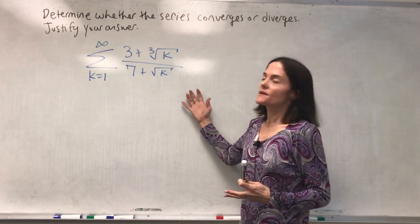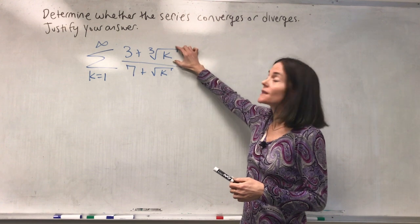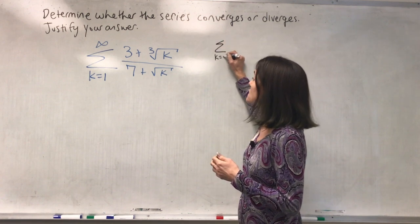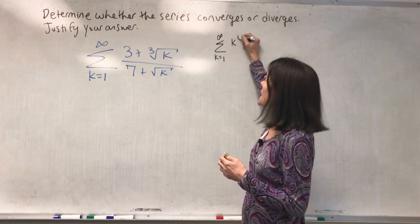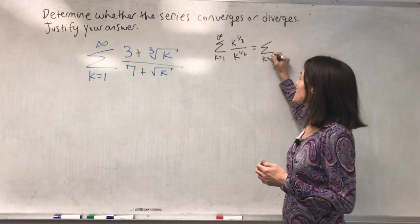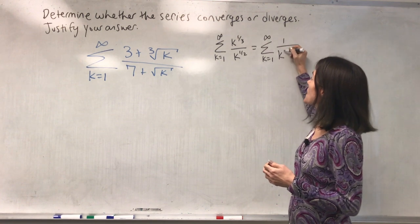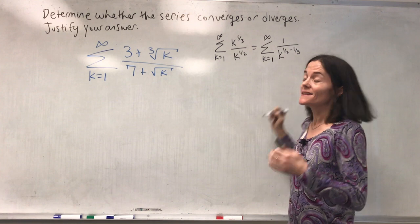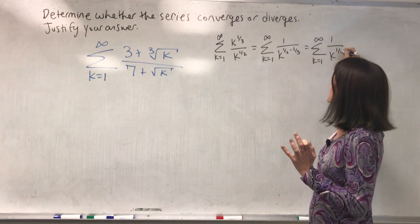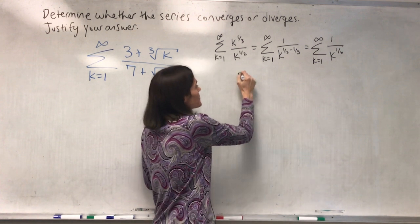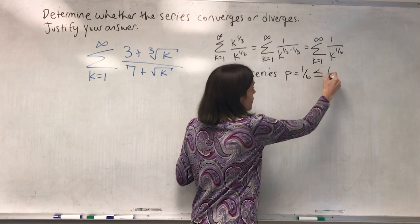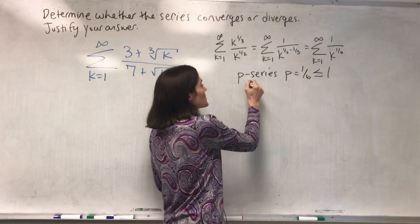This is our last example. What's going on with this series? If k is large, the terms look like the cube root of k over the square root of k. We consider the series from one to infinity of k to the one-third over k to the one-half, which is one over k to the one-sixth — that is, three-sixths minus two-sixths. This is a p-series with p equal to one-sixth, which is less than or equal to one, so it diverges by the p-series test.